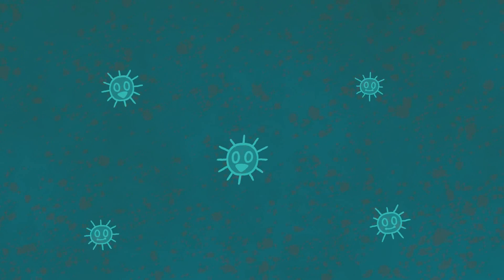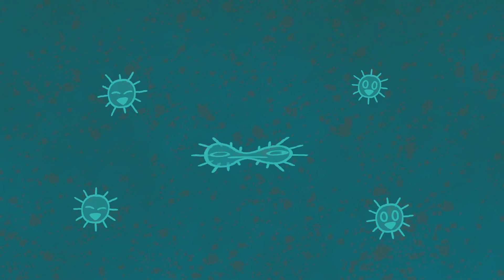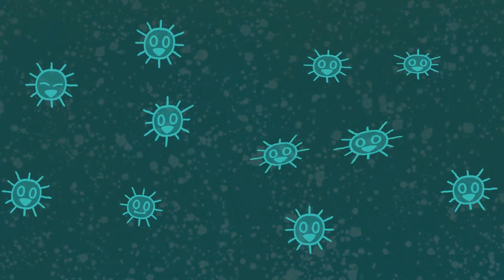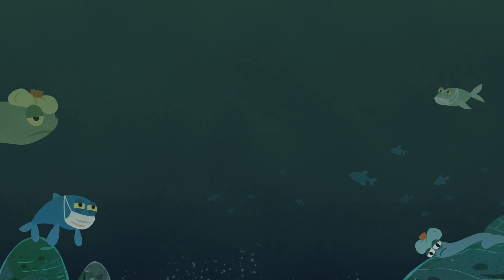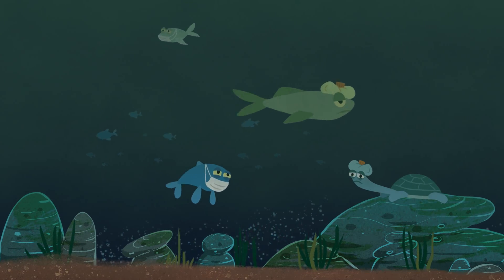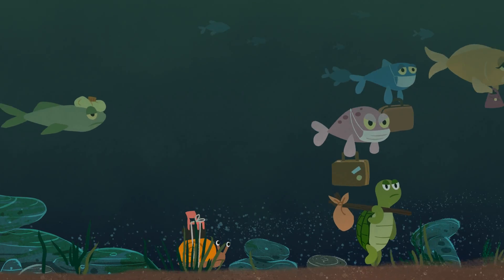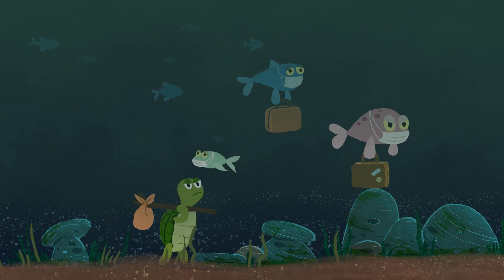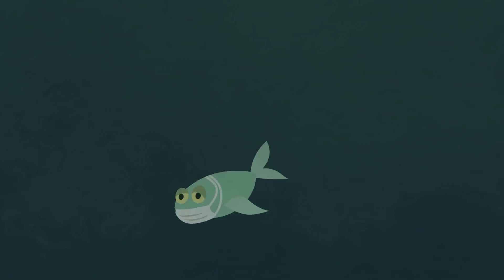When it's warm, bacteria feeding on the carbon quickly multiply, using up oxygen in the water sometimes faster than it can be replenished. This can make aquatic animals sick as they need oxygen to survive. Animals may move away from the blackwater, however some don't and can die.